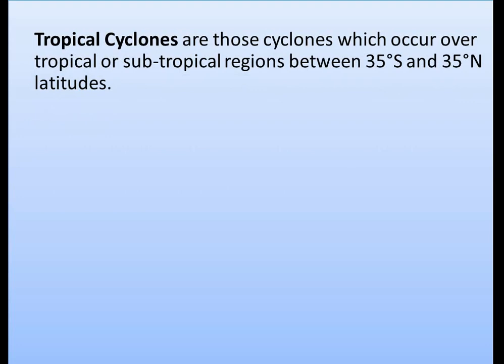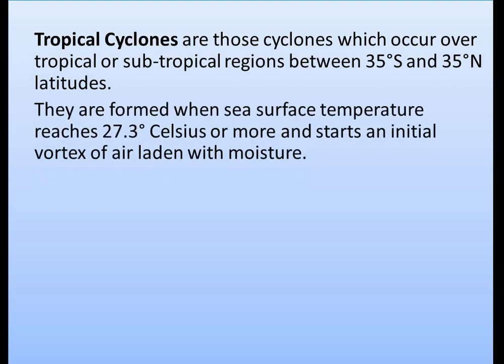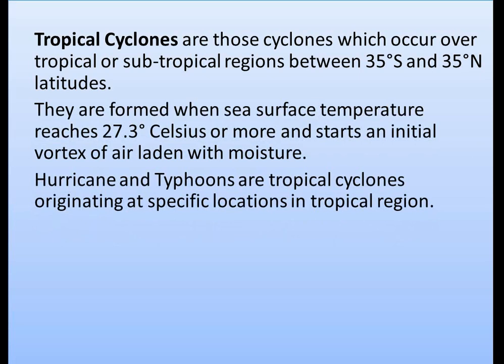Tropical cyclones are basically formed when sea surface temperature reaches 27.3 degrees Celsius or more, starting an initial vortex of air laden with moisture. Hurricanes and typhoons are tropical cyclones originating at specific locations in the tropical region. Keep in mind: hurricanes and typhoons are not different types of cyclones — they are tropical or subtropical cyclones, the only difference being the location where they originate.